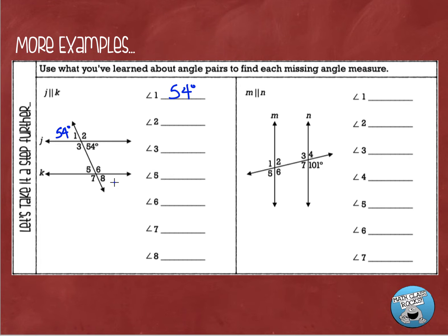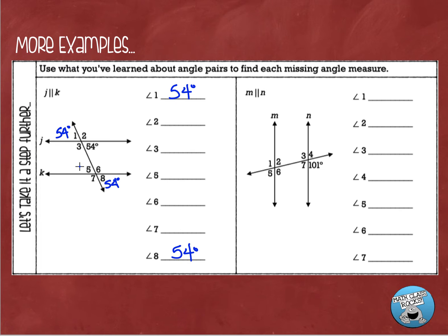Another angle that's 54 degrees is angle 8, because angle 8 is corresponding with this 54 degree angle. If I took line J and slid it on top of line K, 54 would be right on top of this angle. Angle 5 is also going to be 54 degrees — it is corresponding with angle 1, and it is also vertical with angle 8.